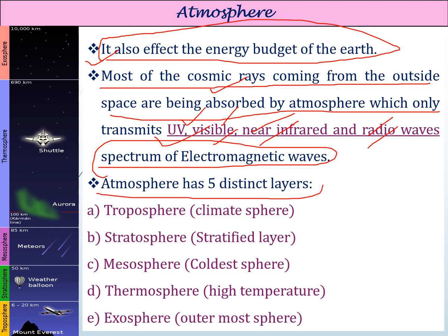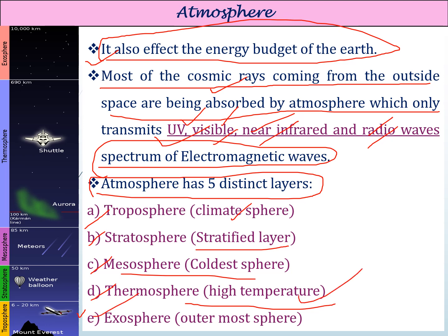The atmosphere has five distinct layers. The first is the troposphere, lying from 6 to 20 km, where all climatic phenomena occur. The second is the stratosphere — a stratified layer with no mixing between layers. The third is the mesosphere, which is the coldest sphere of the atmosphere and the region where meteor showers usually occur. The fourth is the thermosphere, which has high temperatures. The fifth is the exosphere, the outermost and thinnest layer of the atmosphere.